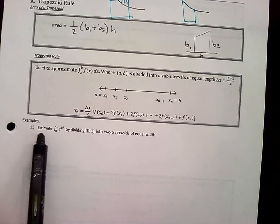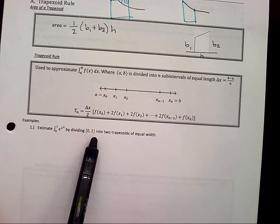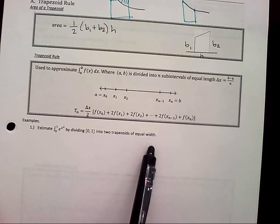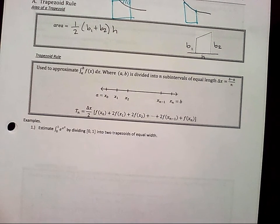So number one, estimate the integral from 0 to 1 of e to the x squared by dividing the interval 0 to 1 into two trapezoids of equal width. This e to the x squared, there's no exact solution. All of the techniques we've done, we cannot integrate this. We would have to approximate it. Okay?